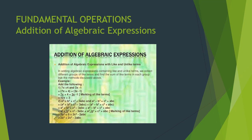We are familiar with the fundamental operations like addition, subtraction, multiplication and division of numbers. We can extend these operations to algebraic expressions as well. Addition of like terms: the sum of two or more like terms is another like term, the coefficient of which is the sum of the coefficients of the like terms. For example, 5a plus 7a equals (5 plus 7) times a, which is 12a. Similarly, 2a plus (minus 4a) equals (2 plus minus 4) times a, which is minus 2a.